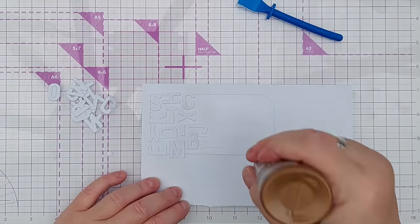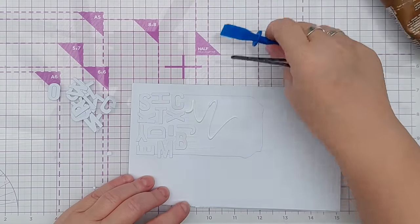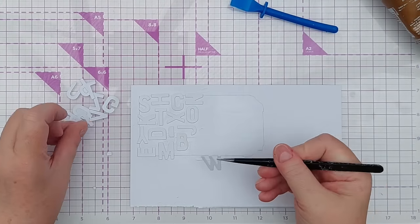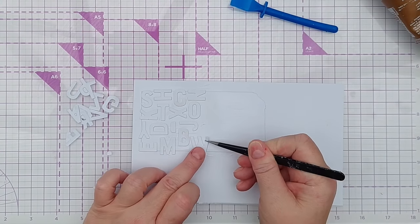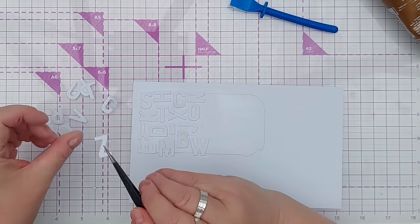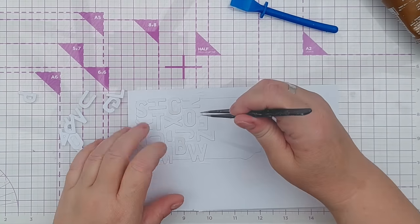And then this J can snuggle in nicely there. So as I say, I'm just building up a grid-like arrangement of letters. It's probably a good idea to think about what words you might accidentally be making with your letters.